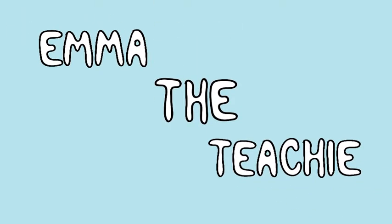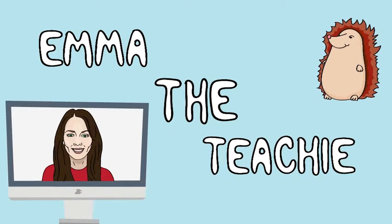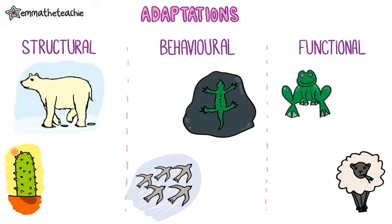Today we're going to learn about some more adaptations. Adaptations are features that allow organisms to survive in the conditions in which they normally live. A simple example is that fish live underwater, so they need gills to take in oxygen from the water.